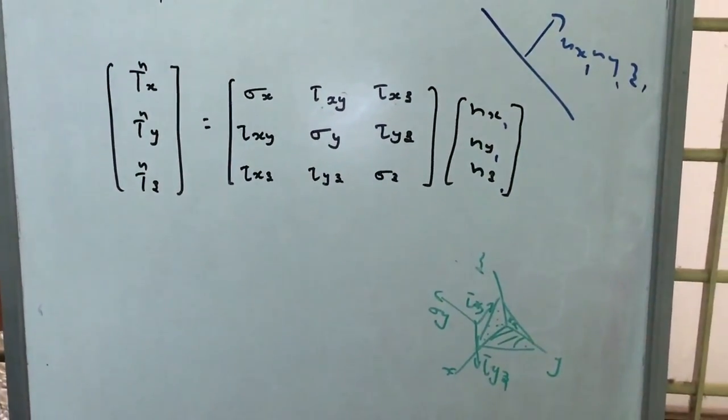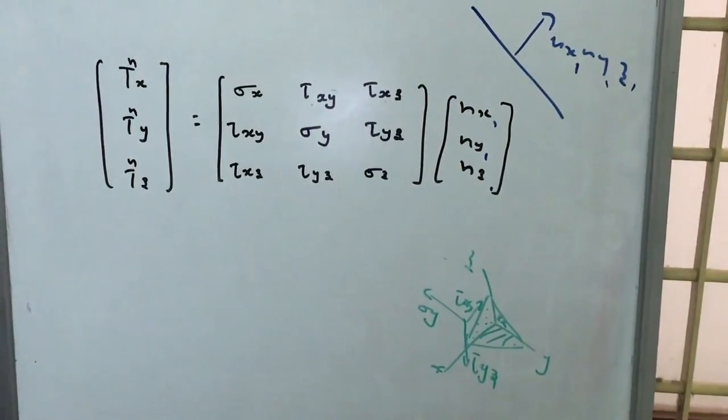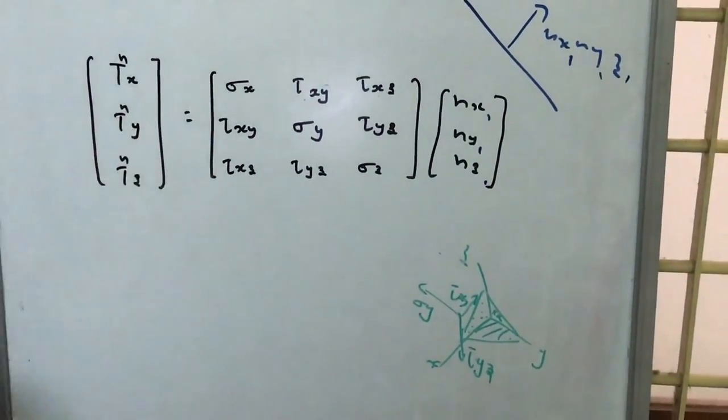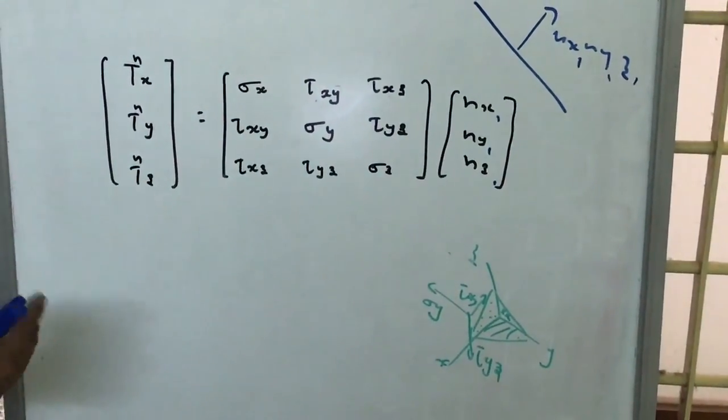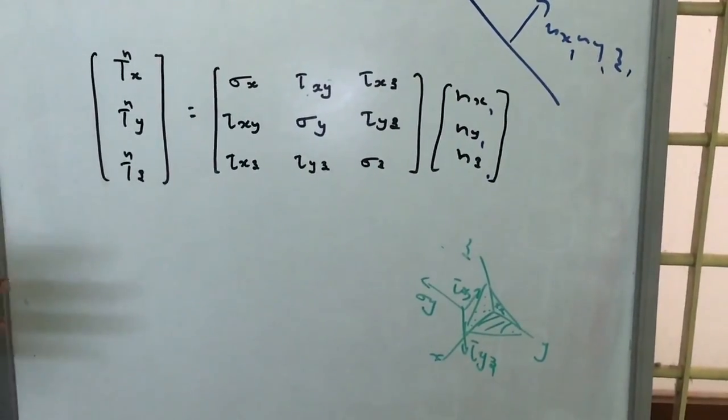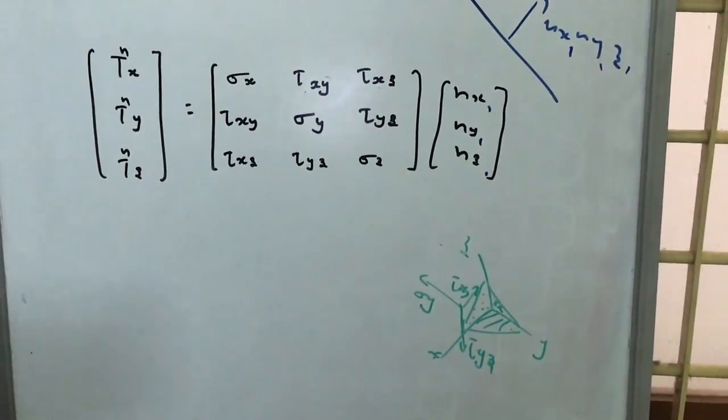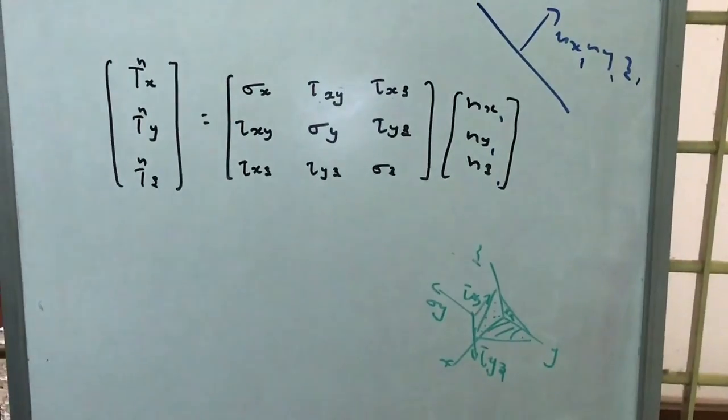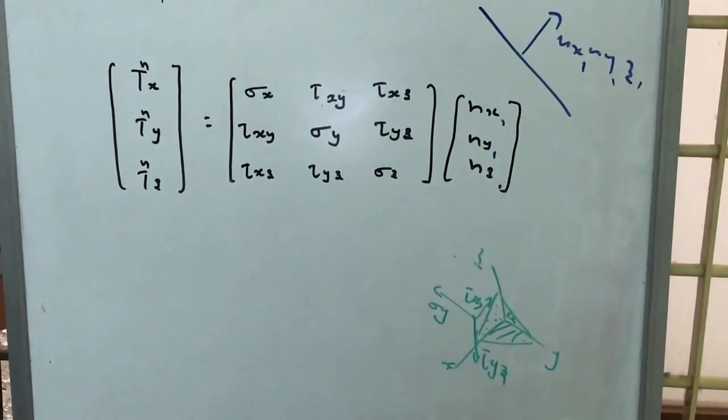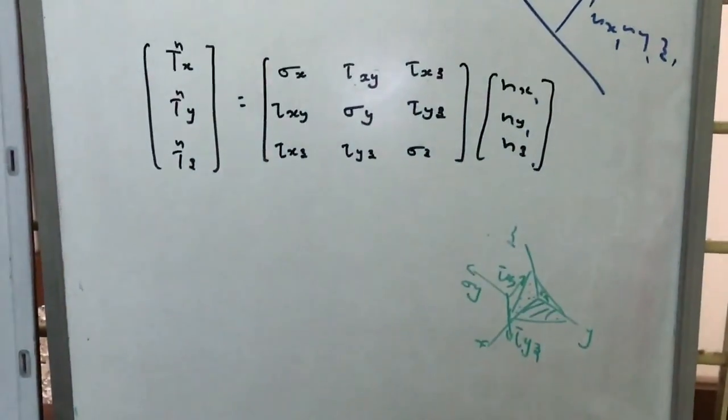So here, this formula is called Cauchy's formula. And by this, we can come to a conclusion that by changing the planes of our consideration, the stress will take different values and the totality of all the stress can be called as stress at a point. Thank you.